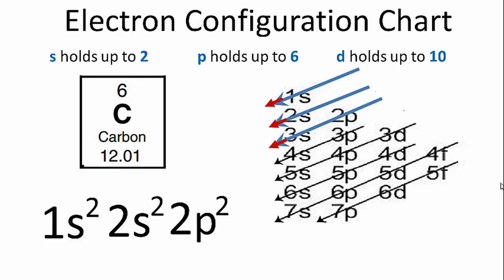So the electron configuration for carbon is 1s² 2s² 2p². If you add those numbers up, 2 plus 2 plus 2, you'll get 6.